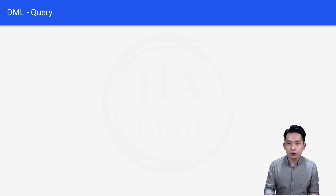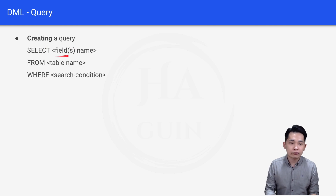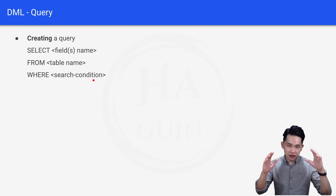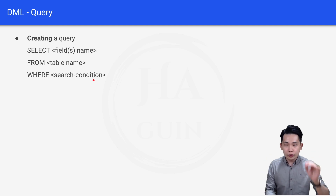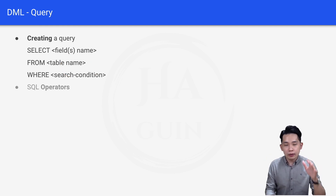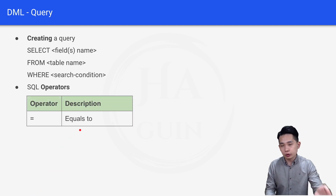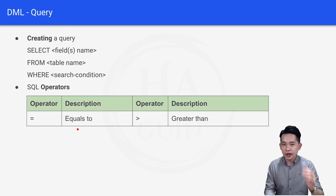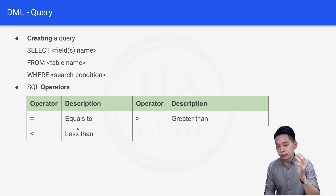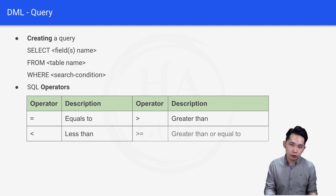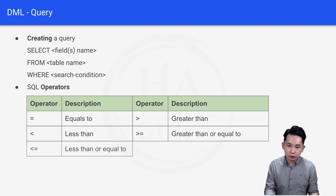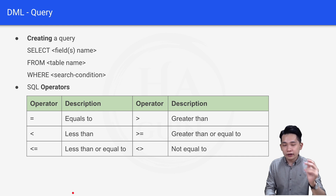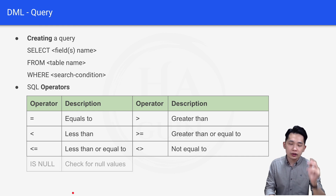In order to create a DML query, we always write like this: SELECT field name FROM table name WHERE search condition. Most DML queries are written this way. We also have SQL operators that we can put in the search condition. The first one is equal to, and then we have greater than, less than, greater than or equal to, less than or equal to, not equal to, and finally IS NULL to check for null values.